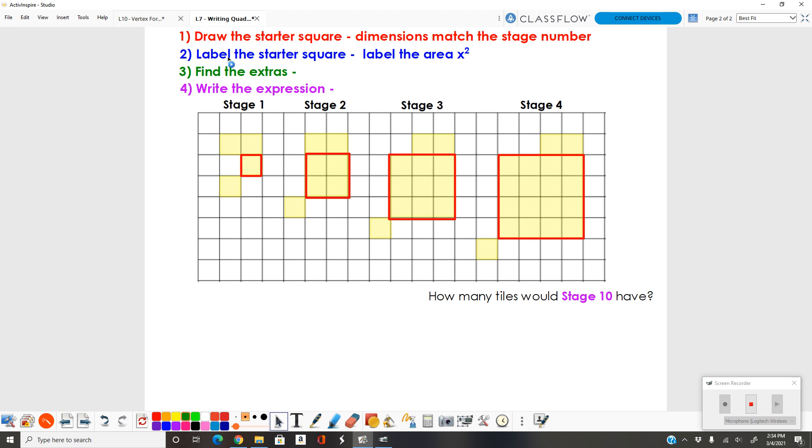Step one, draw your starter square. Step two, we need to label the starter square. Since I don't have full rows and columns, I can't just label them x and x. We're going to label this a little differently. I'm going to label the area of my starter square x squared. Inside this box, I have an area of x squared. Remember, x is your stage number. If I do one squared, that means the area here is one. One times one is one. In my stage 2, two by two, two squared would give me an area of four. We're labeling our area just with the value of x.